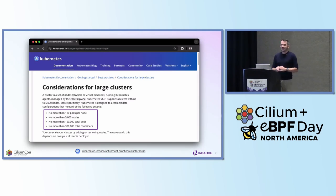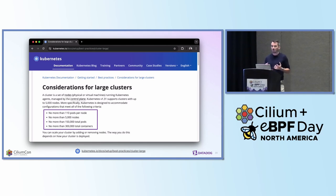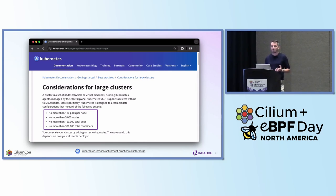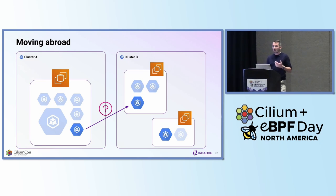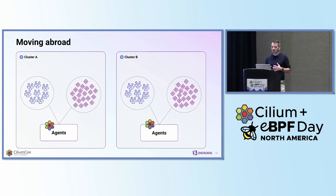Ultimately, there is only a finite number of nodes and pods that a Kubernetes cluster is able to support. So when your applications are about to outgrow those numbers, it might be a good time to think beyond, and a multi-cluster setup might become paramount to keep your business growing. But what about our network policies? Because as our apps can now be running over different clusters, so would their respective endpoints and identities.